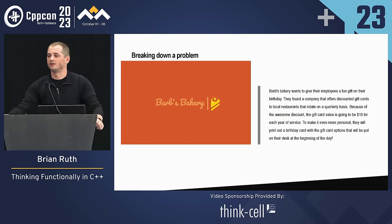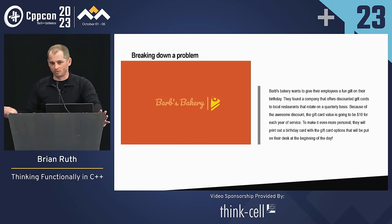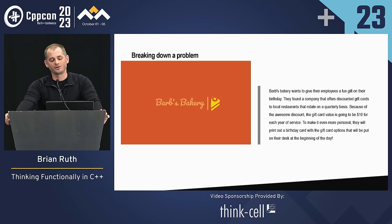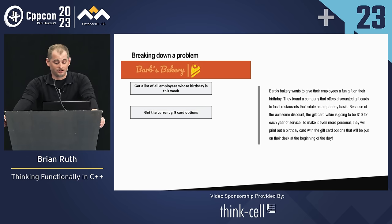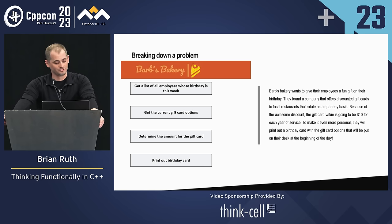With what we've learned so far about actions, calculations, and data, let's break down a problem. Barb's Bakery wants to give employees a new benefit — a company gives discounts on local restaurants that change quarterly. For every year someone has in service, they get $10 towards a gift card. And they want to print out a nice birthday card for them. So: first, get a list of all employees whose birthday is this week; then get the current gift card options; next, determine the amount of the gift card; finally, print out the gift card.